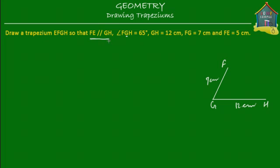Next is FE. FE is parallel to GH, so there will be a line FE parallel to GH. If F is over here, then FG will be 7 centimeters. Let's suppose that E is somewhere over here because FE is equal to 5 centimeters. This line is parallel to GH, and finally we join these two points to complete our trapezium.